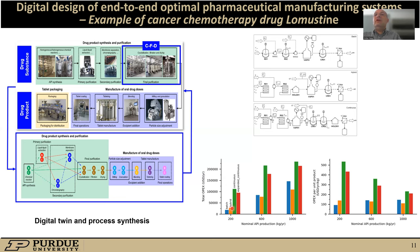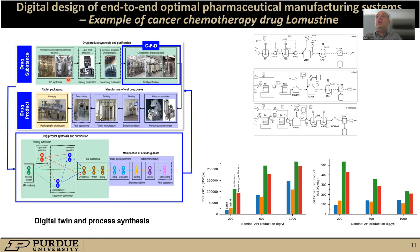Looking at the different alternatives — batch, hybrid, and continuous — and comparing different continuous process flow alternatives, we can see that as we increase the volume of manufacturing, the operating costs of the different alternatives diverge. Generally speaking, as we go from small-scale to larger-scale manufacturing, the hybrid operating mode becomes the most cost-effective, both in terms of operating cost per unit product and total operating costs during the entire manufacturing steps. With this generalized framework, we can create a digital twin of an end-to-end manufacturing system, investigate a particular manufacturing route, and optimize to achieve maximum economic impact and shortened development time for bringing the drug to market.